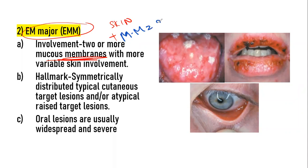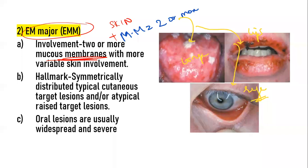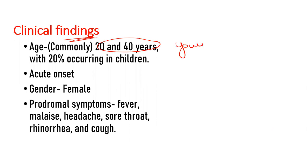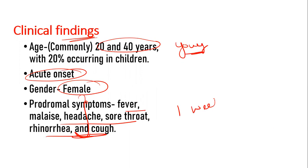Looking at the clinical findings, it is common in a younger age group between 20 to 40 years. It is acute in onset with a female predilection, and there are prodromal symptoms of fever, malaise, headache, sore throat, rhinorrhea, and cough one week before the appearance of the lesions.